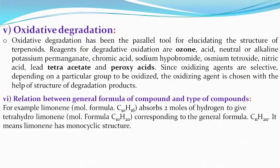Since oxidizing agents are selective depending on the particular group to be oxidized, the oxidizing agent is chosen with the help of the structure of degradation products. For example, limonene absorbs two molecules of hydrogen to give tetrahydrolimonene. Its formula is C10H20, corresponding to the general formula CnH2n, meaning that limonene has a monocyclic structure.